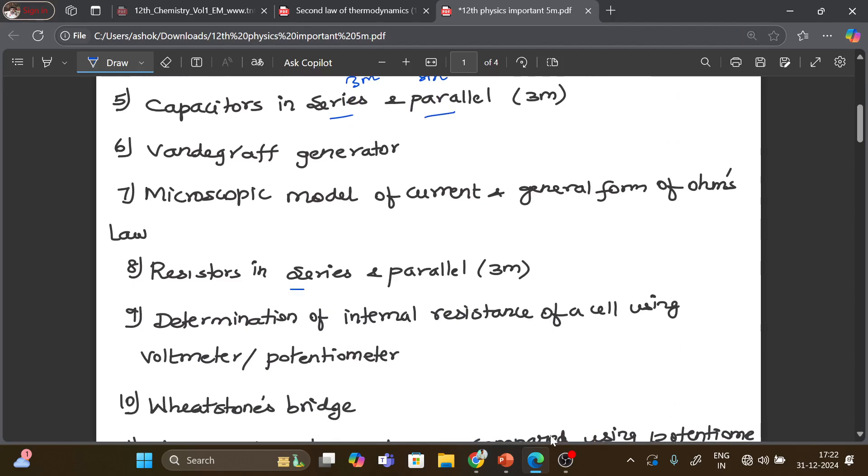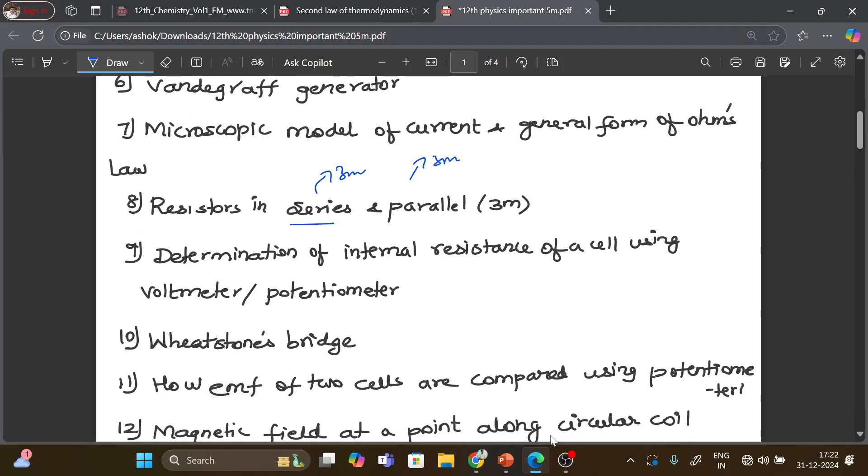Microscopic model of current. Resistors in series and parallel, series is 3 mark, parallel is 3 mark. Determination of internal resistance of a cell using voltmeter. But determination of internal resistance of a cell using potentiometer is a book back question.